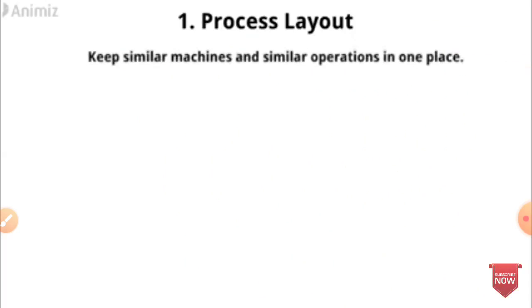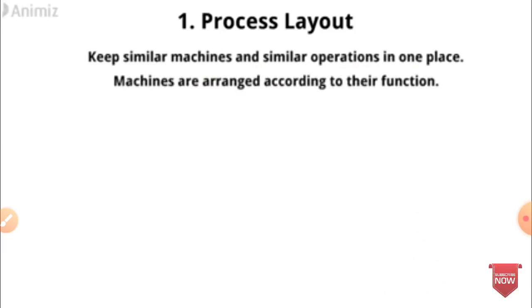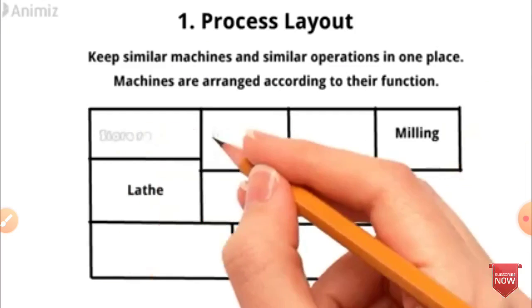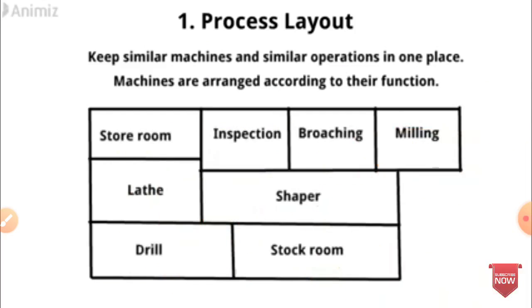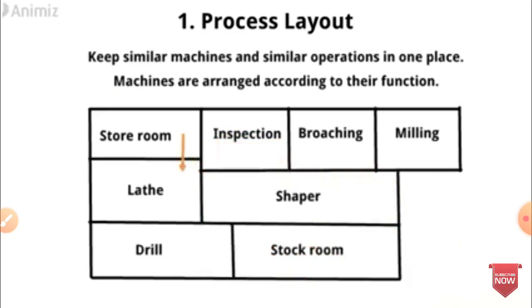The first one is Process Layout. Process Layout keeps similar machines and similar operations in one place. Machines are arranged according to their functions. For example: Store Room, Inspection, Broaching, Milling, Lathe, Shaper, Drilling machines, and Stock Room.